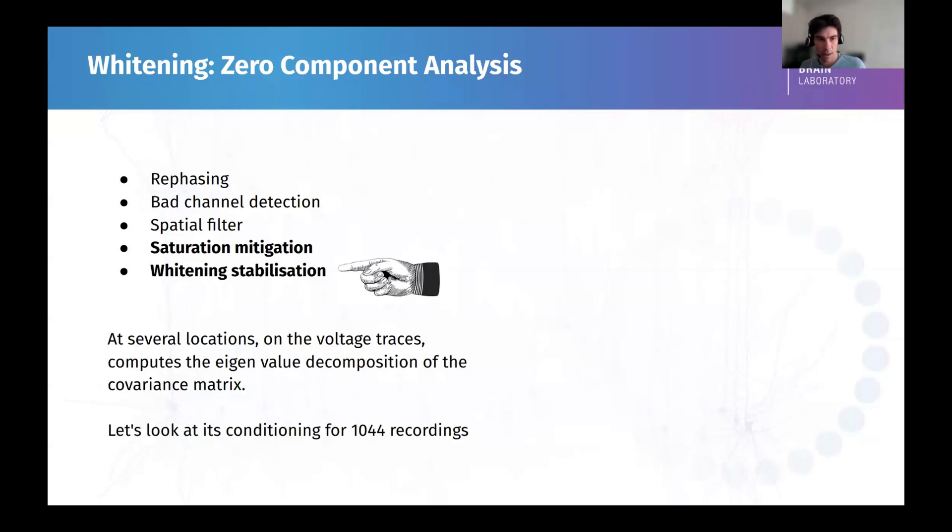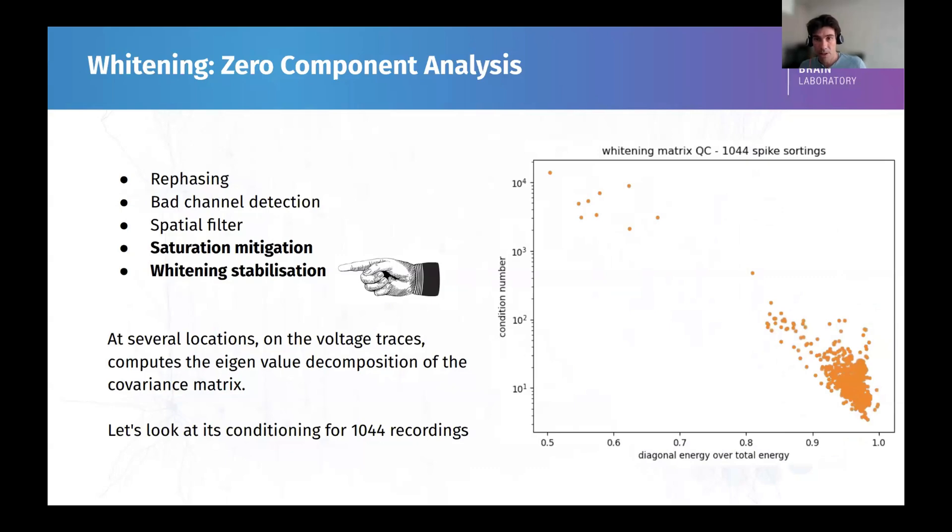The impact of the whitening is that we compute a covariance matrix of the data. We try to estimate this covariance matrix, and then we inverse this covariance matrix so as to decorrelate the channels. What happens is that if we start looking at the conditioning number of this matrix with the stability or how much energy, if you will, is on the diagonal, we can see that most of the recordings stick at a very low condition number here on the single digits. But we have some recordings that are very high up, and those recordings exhibit a very wrong spike sorting.